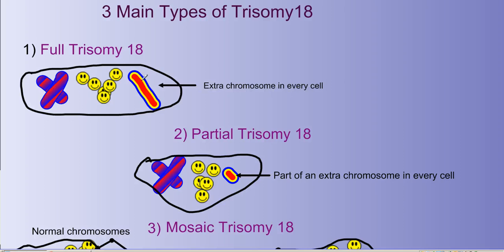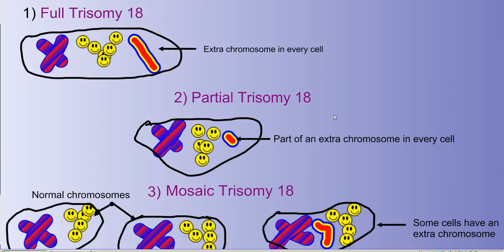The second one is Partial Trisomy. In this trisomy, only part of an extra chromosome is in the cell.